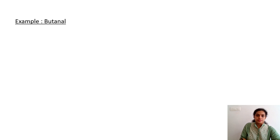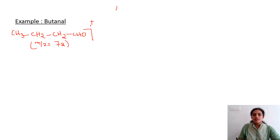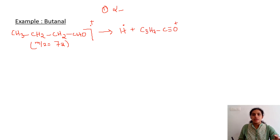Now let us see the fragmentation patterns of butanal. Butanal is CH₃-CH₂-CH₂-CHO, with the molecular ion dot and plus, and the m/z value of this molecular ion is 72. For alpha cleavage, the first mode is H dot eliminated, and the remaining positive charge gives C₃H₇-C≡O⁺. Since only one hydrogen is expelled, the m/z value is 71.